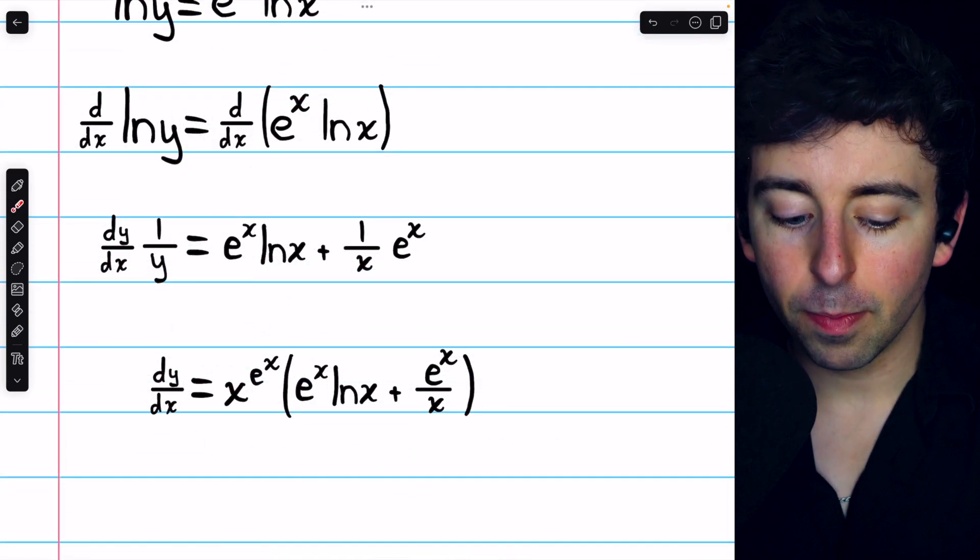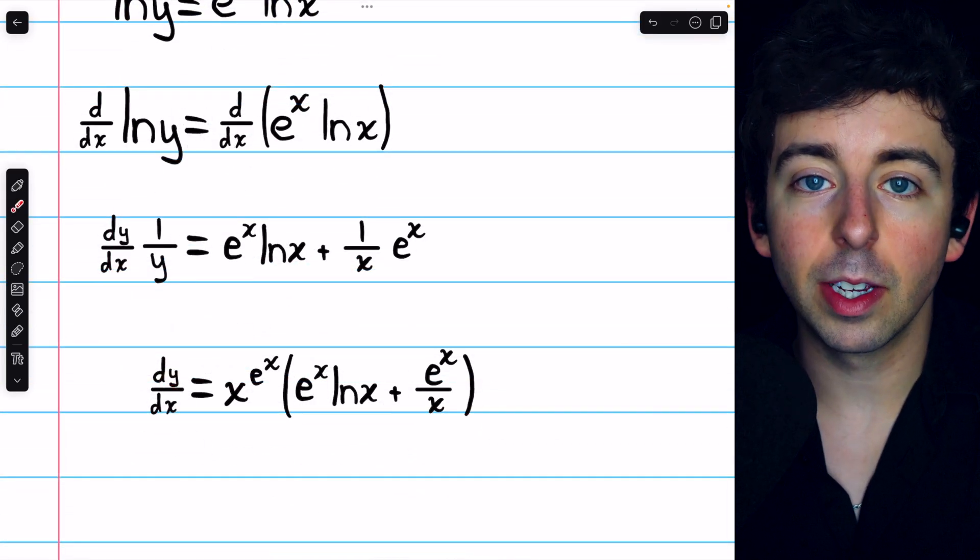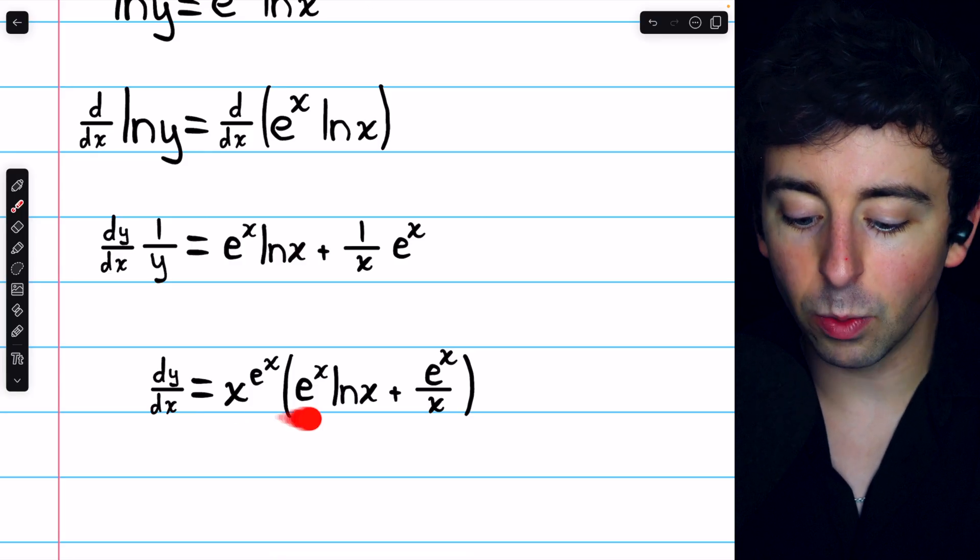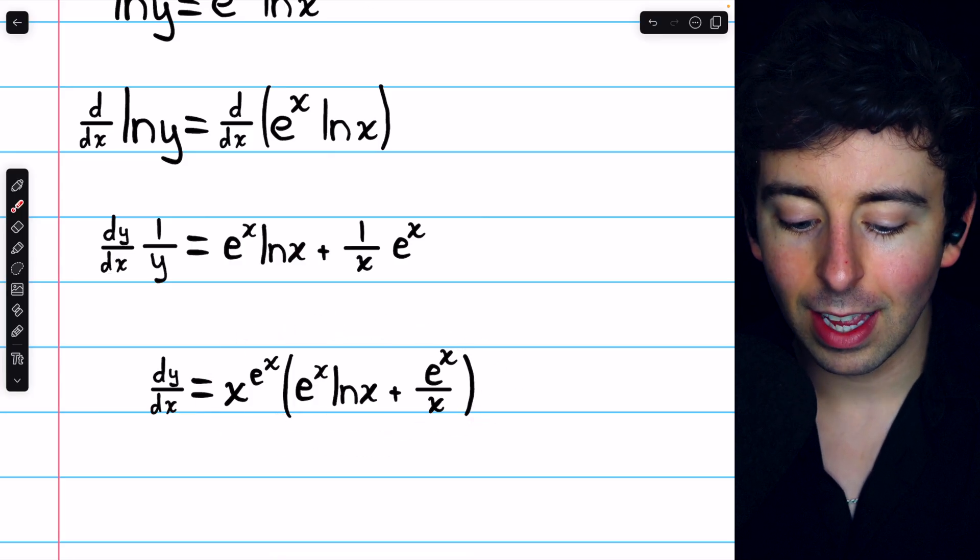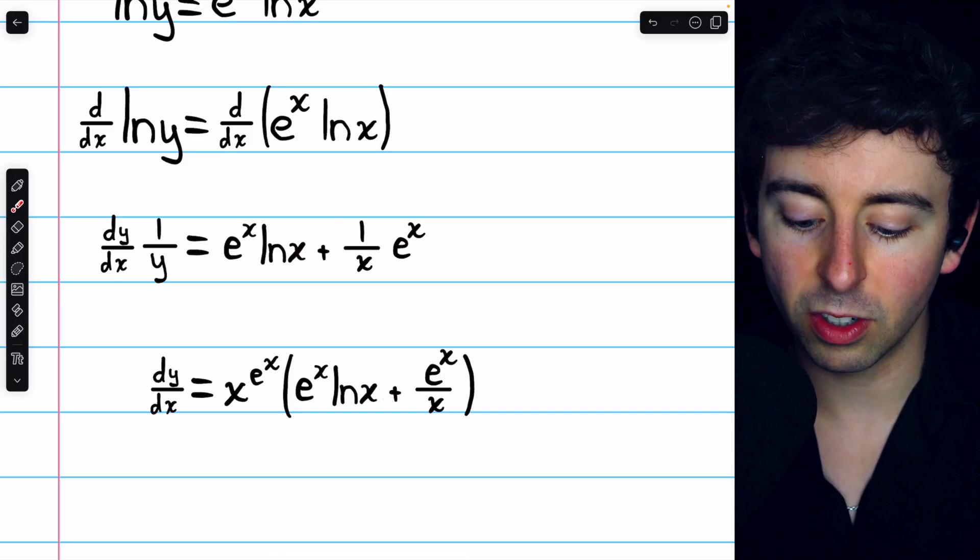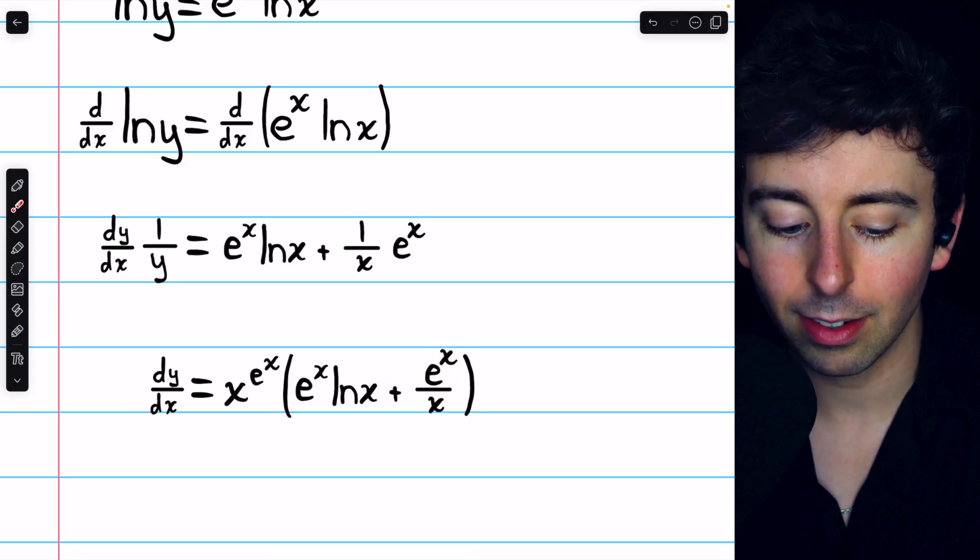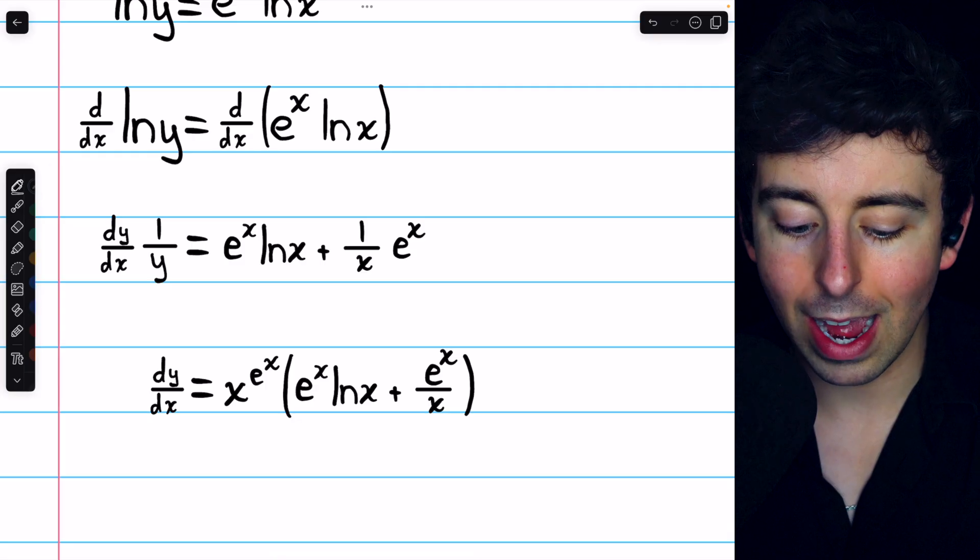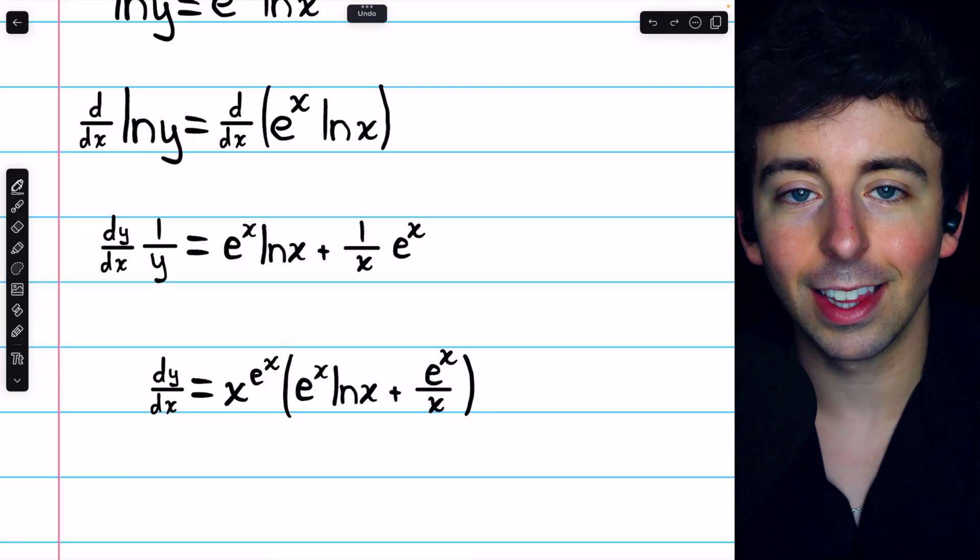And that gets us here. On the left, we just have dy dx. That's the derivative of our function. And on the right, we see what that derivative is. It's e to the x ln x plus 1 over x e to the x, which is the same as e to the x over x, multiplied by y, which is x to the e to the x.